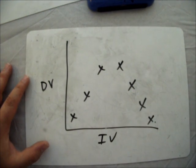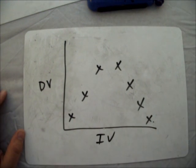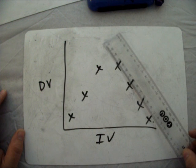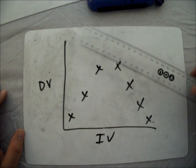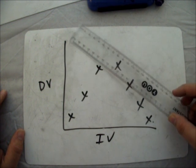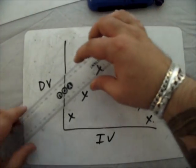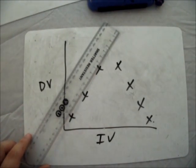I've got another example here of a data set that needs a curved line of best fit. And if you find it difficult to spot with your eye, just get a ruler out. And you can see that there is no particular arrangement I can put the ruler down that describes the pattern of all of the results.